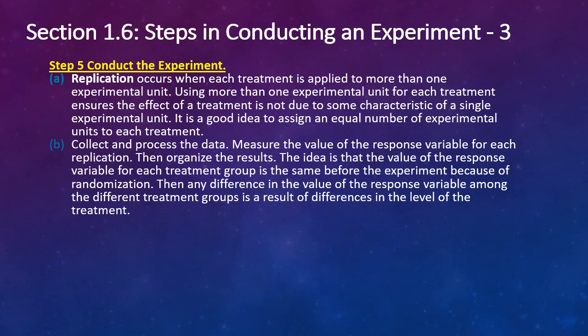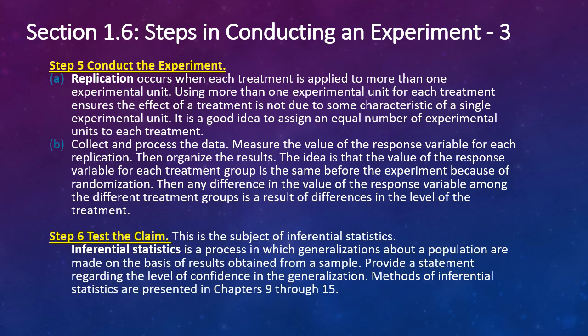Collect and process the data. Measure the value of the response variable for each replication. Then organize the results. The idea is that the value of the response variable for each treatment group is the same before the experiment because of randomization. Then any difference in the value of the response variable among the different treatment groups is a result of differences in the level of treatment. And then finally test your claim. This is the subject of inferential statistics. Inferential statistics is a process in which generalizations about a population are made on the basis of the results obtained from a sample. Provide a statement regarding the level of confidence in that generalization as well. Methods of inferential statistics are presented in chapters 9 through 15.